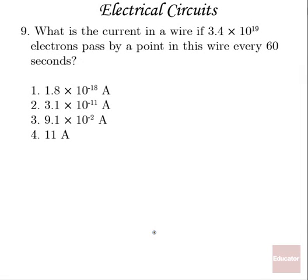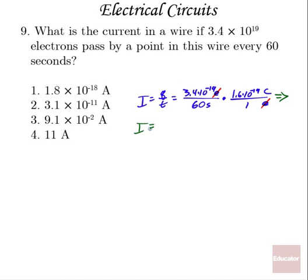All right, one more. What is the current in a wire if 3.4 times 10 to the 19 electrons pass by a point in this wire every 60 seconds? Well, our current is going to be charge divided by time, which is 3.4 times 10 to the 19 elementary charges every 60 seconds. But we need to convert those elementary charges to coulombs. And I know that one elementary charge is 1.6 times 10 to the minus 19 coulombs. So my elementary charges will make a ratio of 1, and I'm going to determine that I have a current then of right around 0.091 amperes, or 9.1 times 10 to the minus 2 amperes. Correct answer there, number 3.